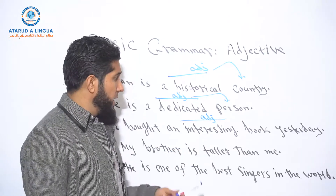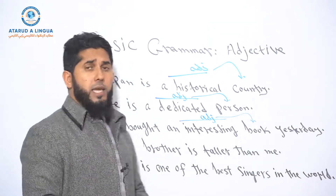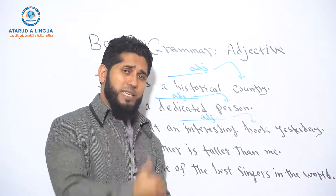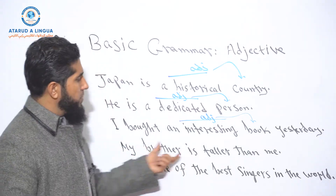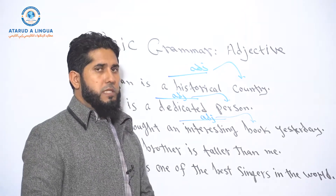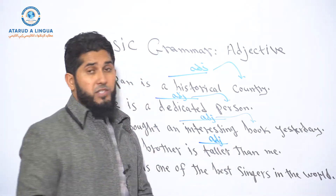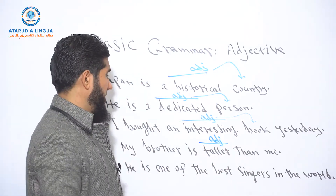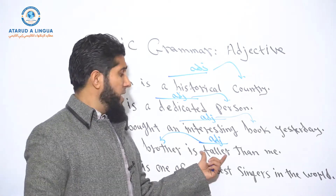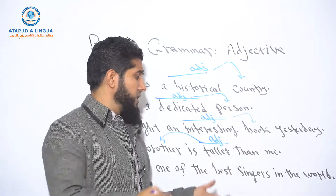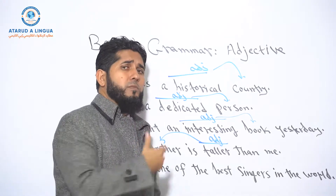'Interesting' describes the noun 'book' — what kind of book did I buy? I bought an interesting book. Example number four: 'My brother is taller than me.' The word 'taller' is an adjective because it describes the noun 'my brother.' This adjective is in the comparative degree — 'tall' is the positive or simple degree, and 'taller' is the comparative degree.